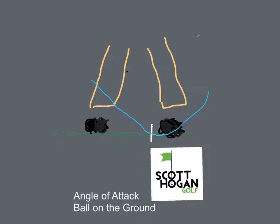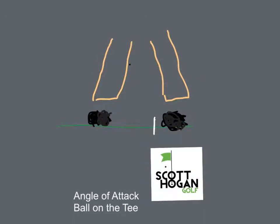Now if we start to look at on a tee, this is where things get a little bit different. When you start to look at the tee, we're going to have the same ball position here, and if we take the same angle of attack and the same swing, our swing is now going to start to curve up a little bit sooner, to where we actually want to be sweeping the ball off the tee or actually swinging and hitting the ball on the way up. That's actually ideal where you start launching the ball higher.